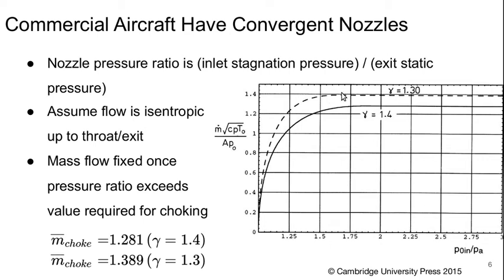Once we hit the choked point, it doesn't matter what we do to the pressure ratio — we can raise it more and more and it doesn't change the non-dimensional mass flow going in. Of course the physical mass flow continues to go up because if we're raising the pressure ratio by raising the inlet stagnation pressure, this value is going up. If the non-dimensional term is constant, then mass flow must also be going up. Temperature will typically be going up too, but because it's under the square root and the temperature rises less than the pressure rise, the mass flow will physically rise.